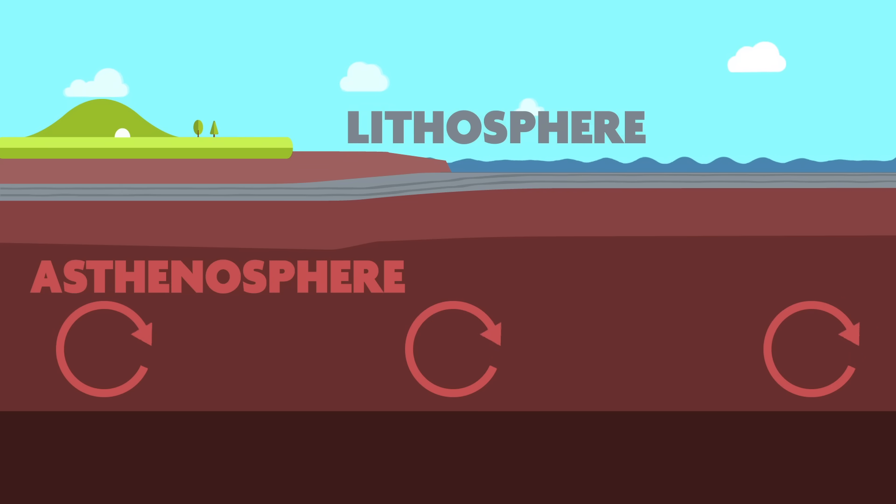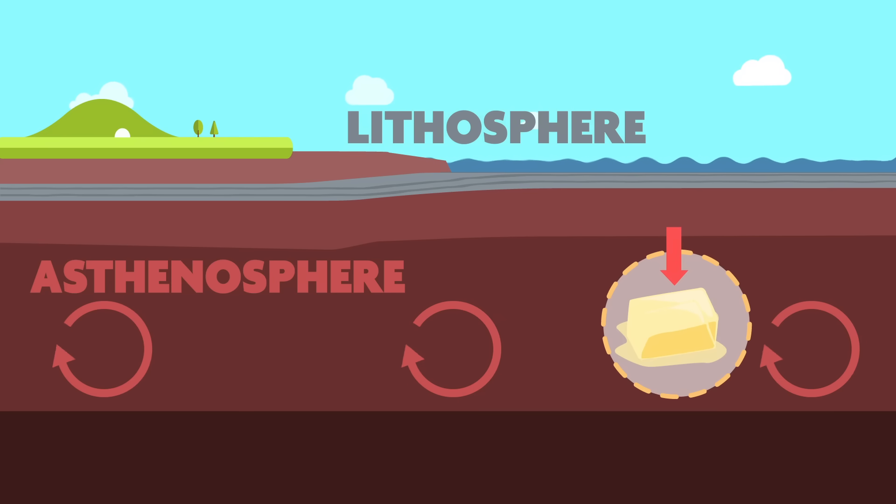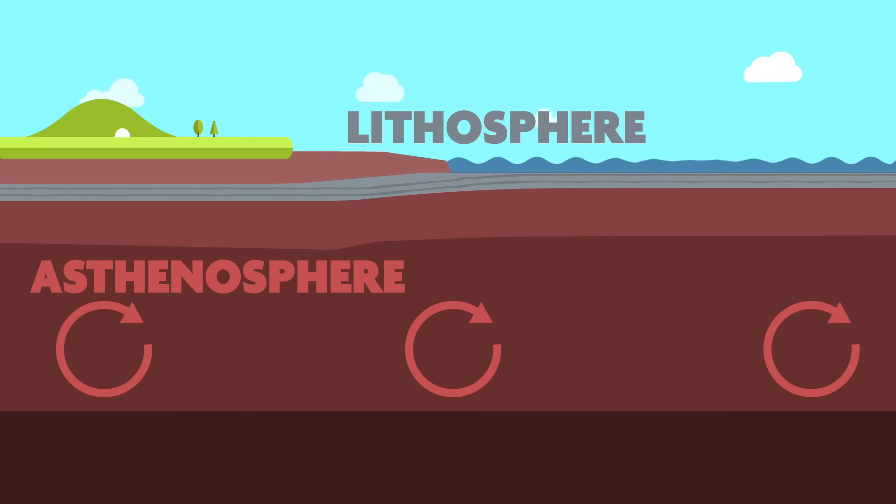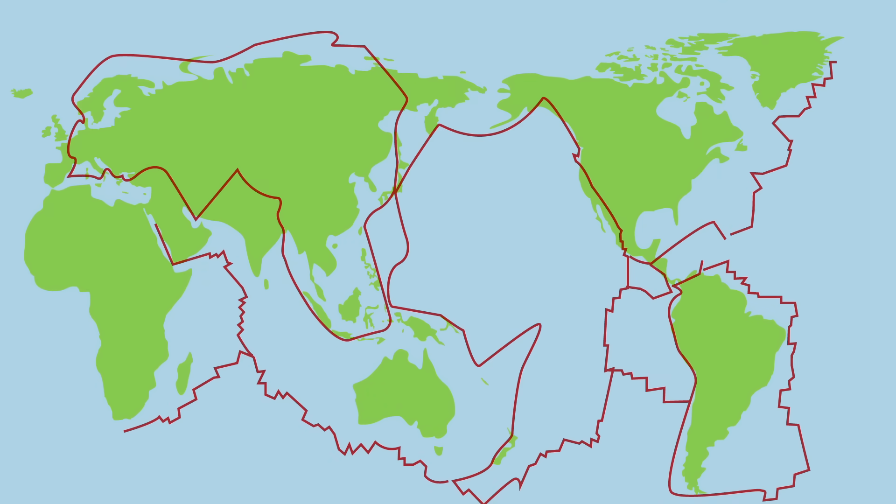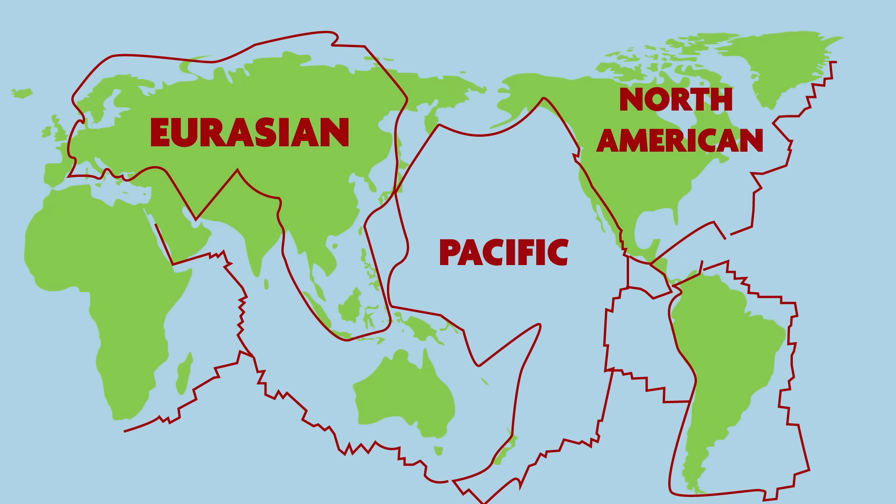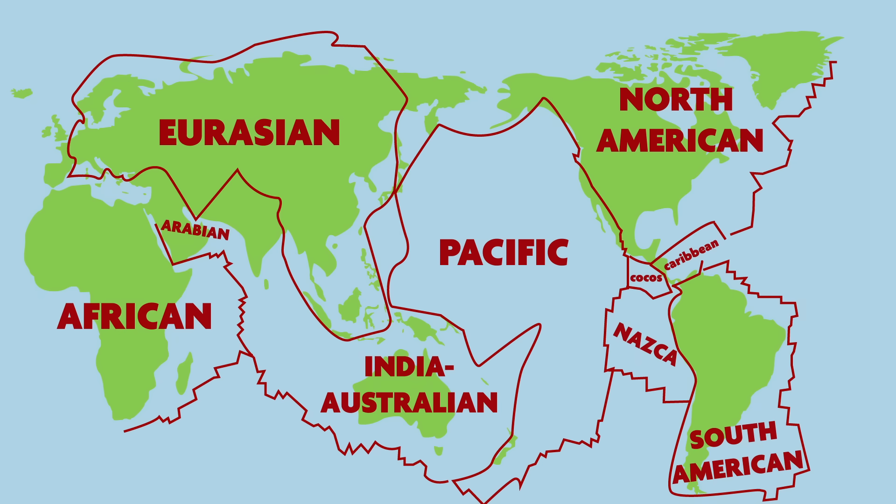In some ways, the consistency of the asthenosphere can be compared to that of butter. Even though it is a solid, it can be pressed and molded. Convection in the asthenosphere forms the foundation of plate tectonics. The Earth has 10 small and large plates, which include the North American plate, the Pacific plate, the Eurasian plate, and the Nazca plate.